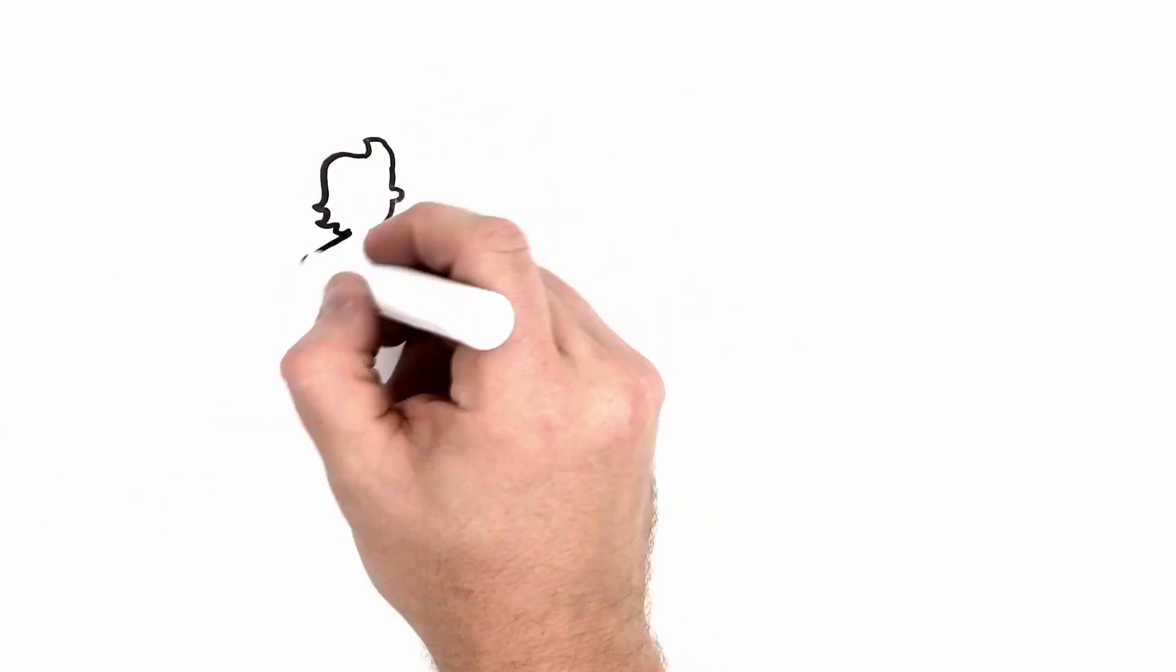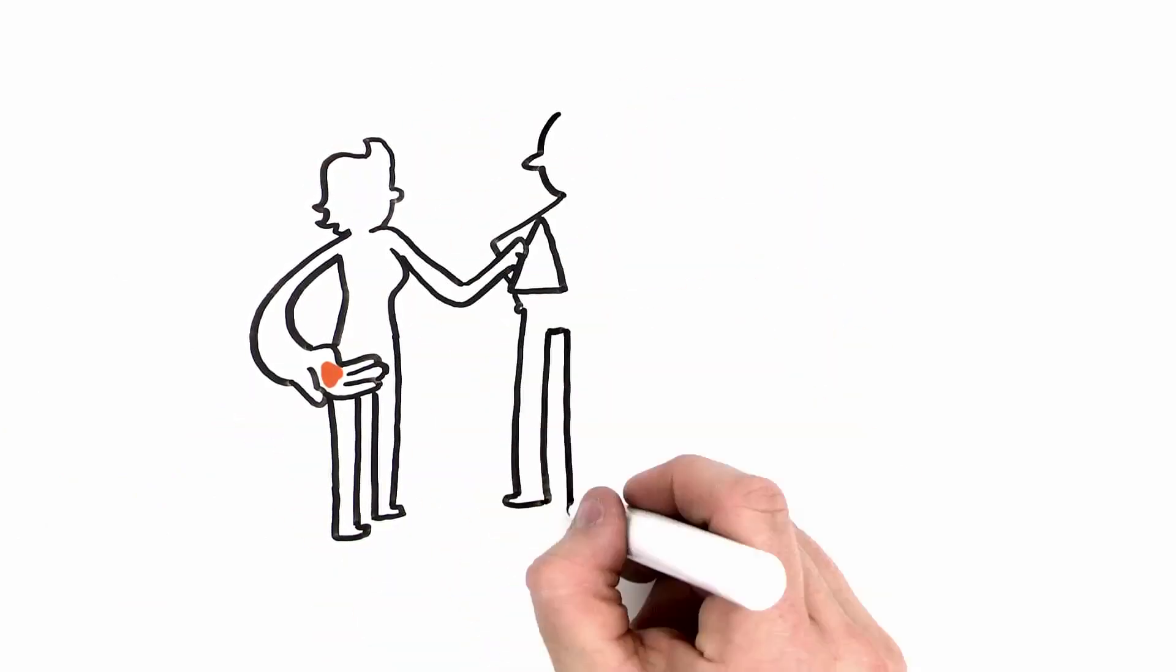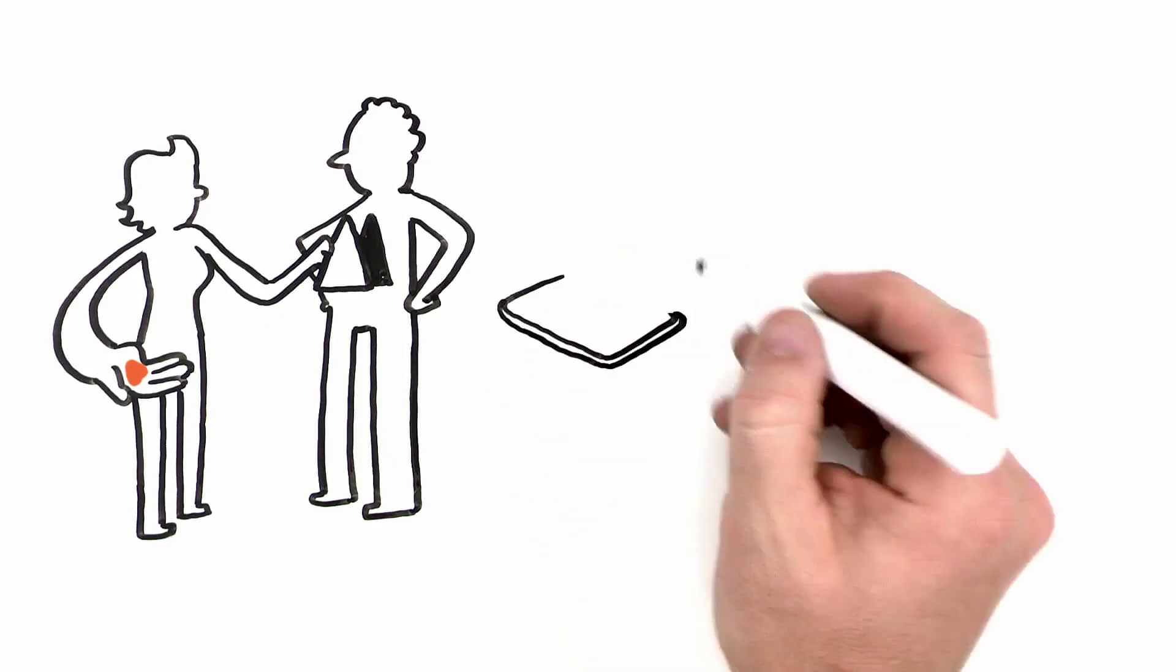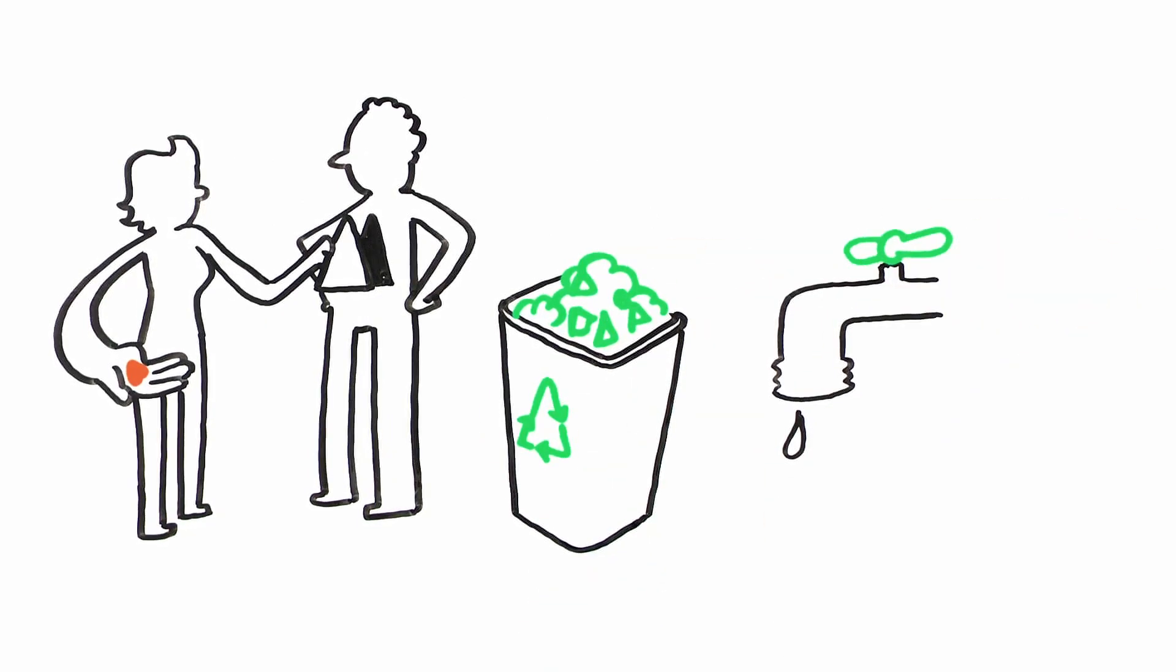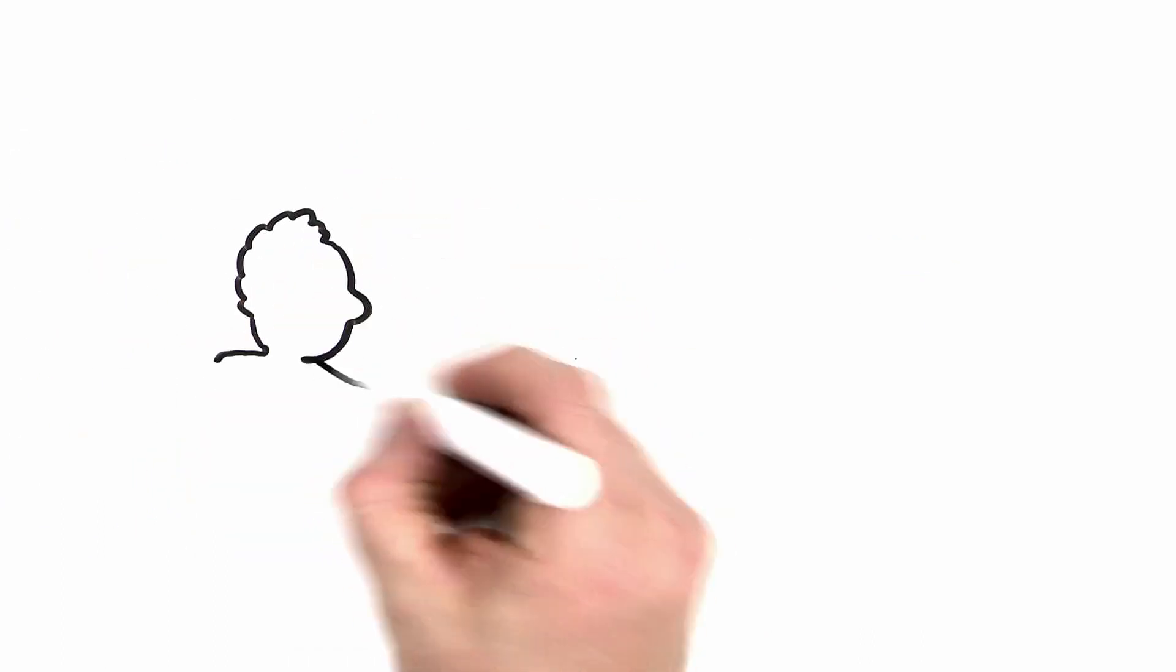People make sustainable development happen by helping friends and family, by recycling waste, by teaching kids how to turn off the tap. Most people are already volunteering without being aware of it.